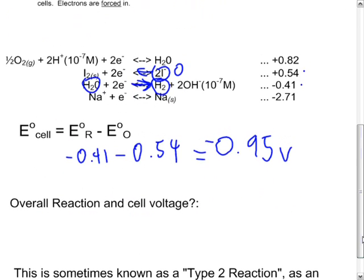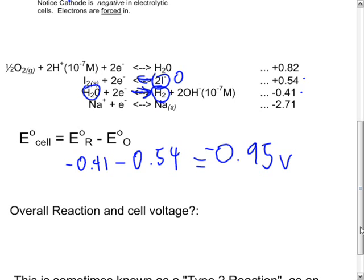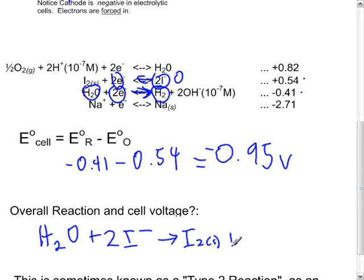The overall cell reaction, as well as the cell voltage, in this case, both have two electrons, and so we don't need to worry about any special balancing here. It looks like it all works out. So in terms of reactants, we have H2O plus 2I minus goes to I2 solid plus H2 plus 2OH.